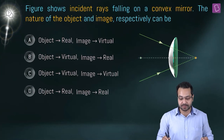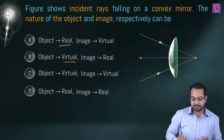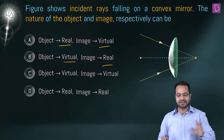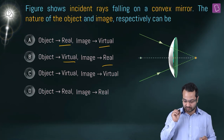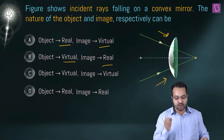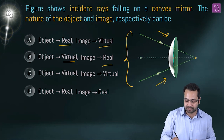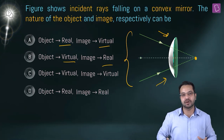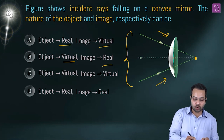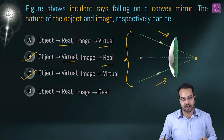Next question: incident rays falling on a convex mirror are shown in a figure. We must identify the nature of the object and image. The incident rays are converging, so they cannot intersect in real space — the object must be virtual. Options with a real object are eliminated.